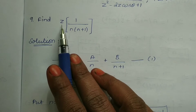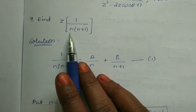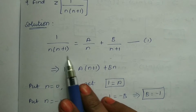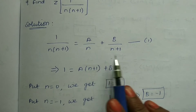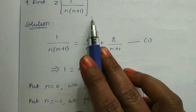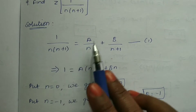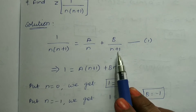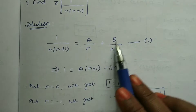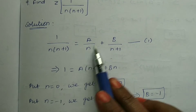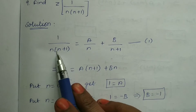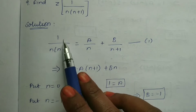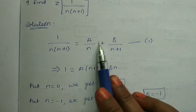Here you can find the Z-transform of 1 by n(n+1). We can write this as a partial fraction: A by n plus B by (n+1), and cross-multiply. If we cross-multiply, the denominators are the same on both sides, so we have to write the numerator equal to the numerator.